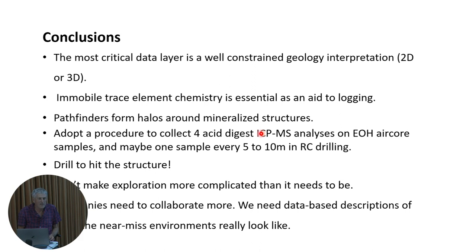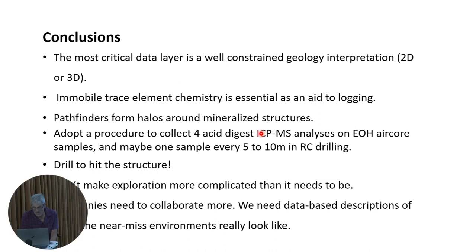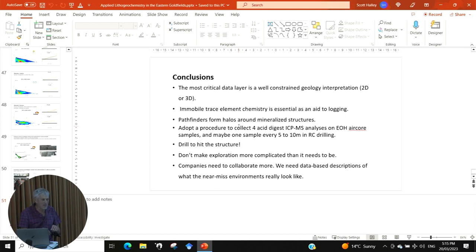It's really useful to have some standard way of looking at pathfinder element distributions so you can map the halos around potentially mineralized structures. When you come to drill those targets, don't drill the geochemical anomaly — drill the structure that those things are bleeding off. The geochemistry will help you map the footprint of the hydrothermal system. Once you know where the hydrothermal system is, call in your structural geologist to put together a structural model and go drill the structural targets. Don't make exploration more complicated than it needs to be. If we all collaborate and share these atlases of footprints, we will all have a much better idea of what a near miss looks like. Thank you.